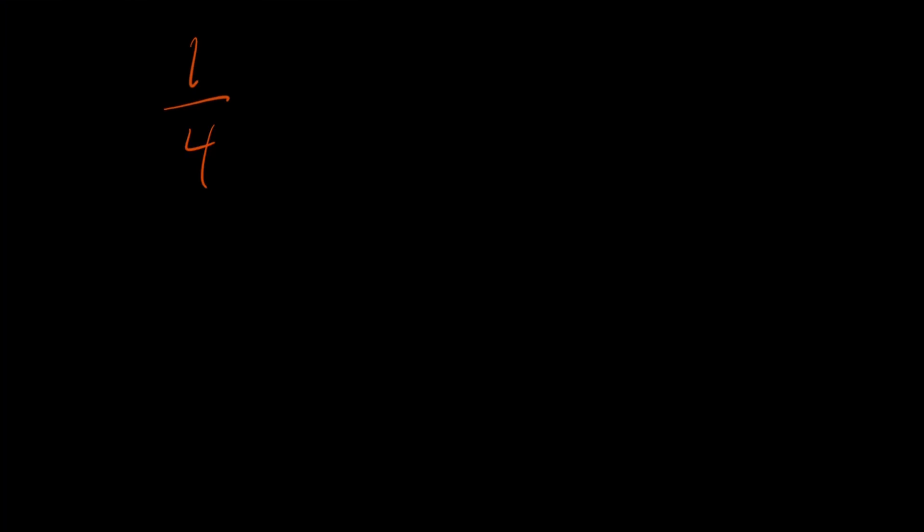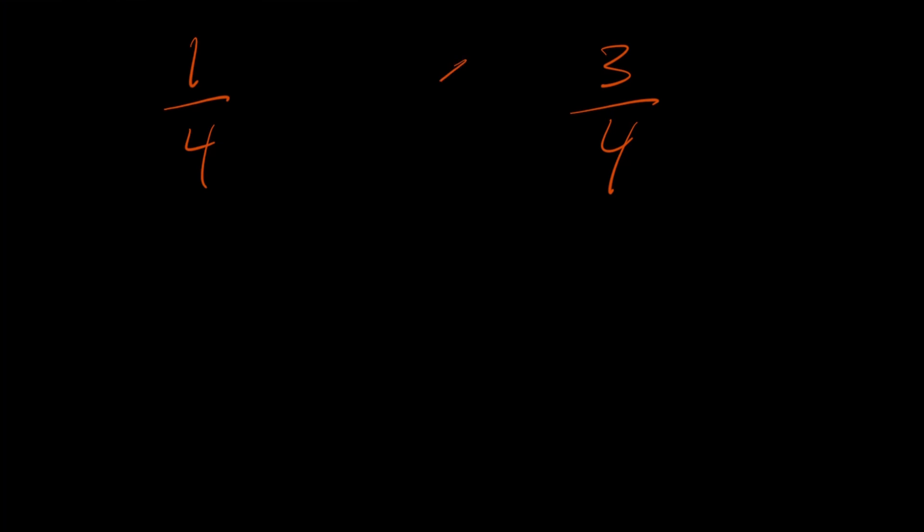I'll give you an example using a really easy problem. If we're looking at one fourth and comparing that to three fourths, well, obviously since the denominators are the same, it makes it really easy to see which one's bigger. If you take something and split it up evenly into four parts, if you have three of them, it's going to be more than if you have one of them. So three fourths is going to be greater than one fourth. Pretty simple, right?